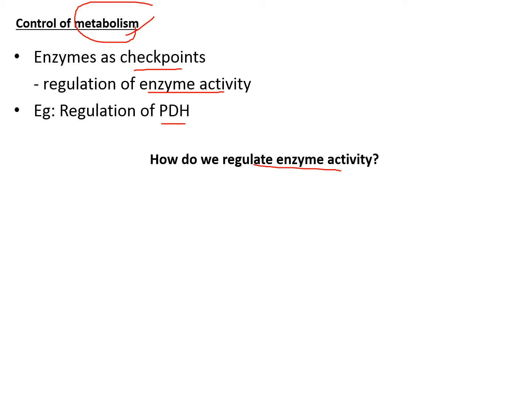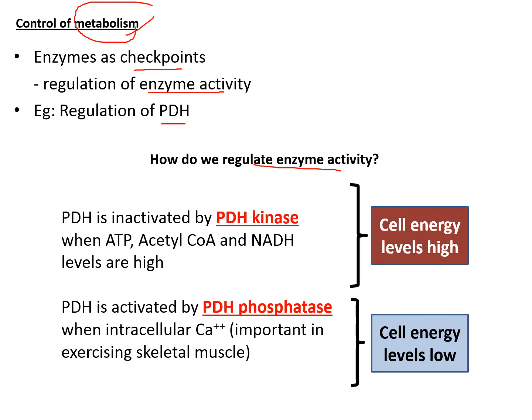One very important way of regulating enzyme activity is by phosphorylation or dephosphorylation — that is, by the addition or removal of a phosphate group. The addition of a phosphate group to the enzyme is known as phosphorylation, performed by the enzyme kinase. The removal of the phosphate group is known as dephosphorylation, performed by the enzyme phosphatase.